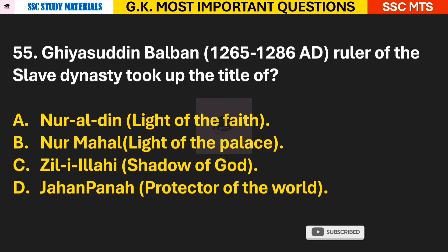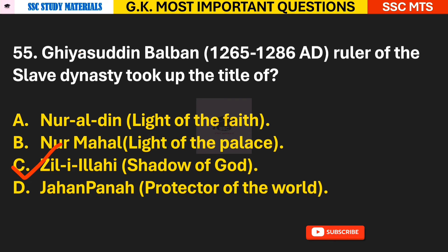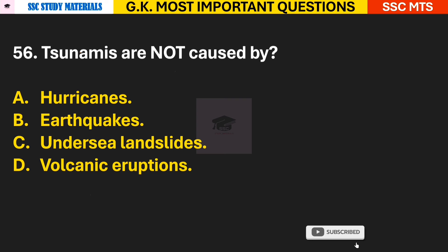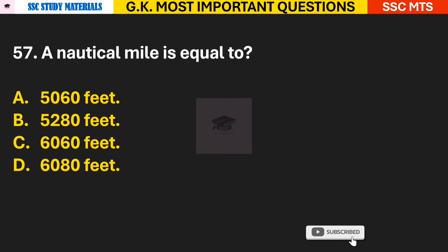Question 55: Ghiyasuddin Balban, ruler of the Slave Dynasty, took up which title? Answer C — he took up the title 'Zill-i-Ilahi', meaning Shadow of God. Question 56: Tsunamis are not caused by which of the following? Answer A — tsunamis are not caused by hurricanes.